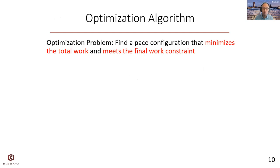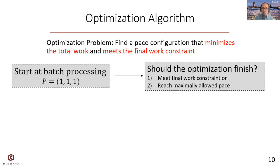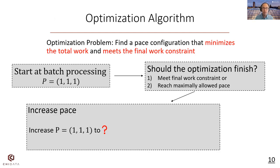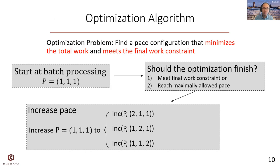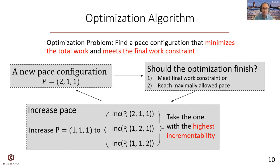With the incrementability computed, we propose an optimization algorithm that leverages incrementability to reduce the total work. It is a greedy algorithm that starts at batch processing where all paces are set to 1, and gradually increases the paces to reduce the final work. Before each step, we check whether this optimization should finish — either when we have met the final work constraint or have reached the max pace. If not, we consider increasing the pace of one query path by 1, check all possible options, and take the one with the highest incrementability. We then have a new pace configuration and repeat this process until optimization finishes.